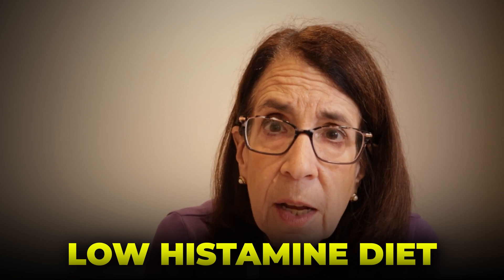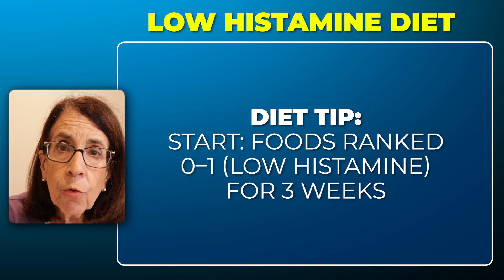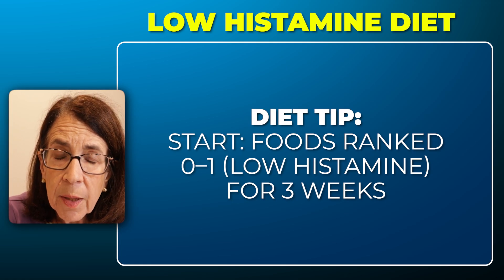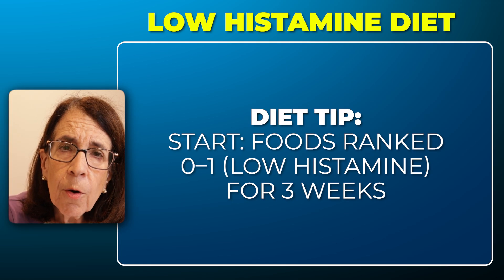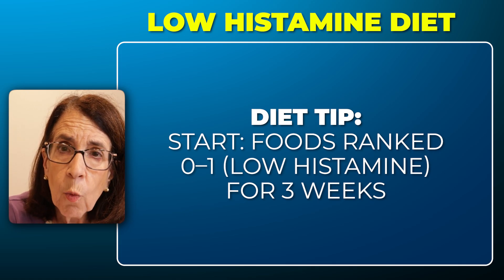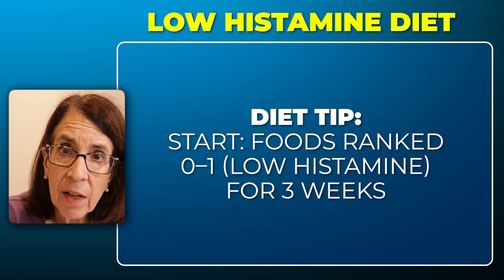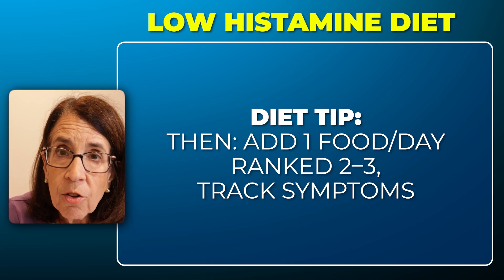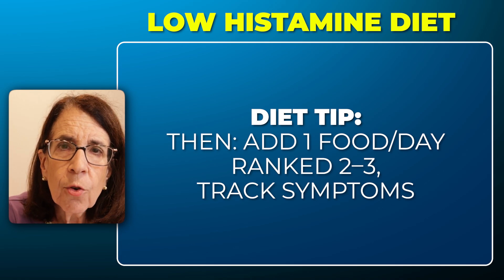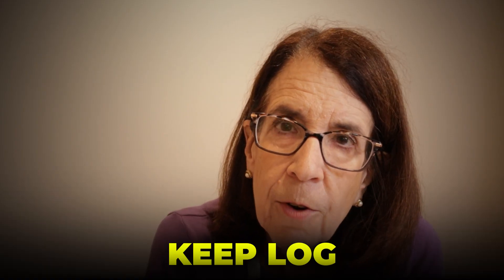I usually recommend trying a low-histamine diet in addition to mast cell stabilizers and antihistamine medication. It doesn't help everybody, but there is a list of foods with their histamine potential available online. Foods are ranked from zero to three in terms of histamine potential. I recommend trying for about three weeks to limit to foods ranked zero and one — those with minimum histamine potential — then adding one food per day ranked two or three, and keeping a log of whether those foods cause symptoms like pain, abdominal pain, gas, bloating, diarrhea, difficulty breathing, flushing, or a rash.